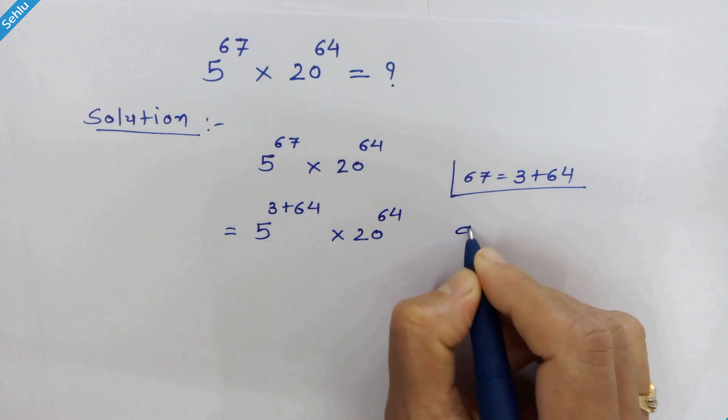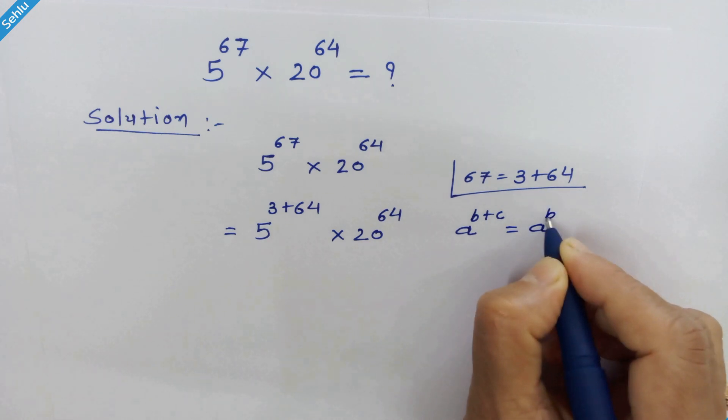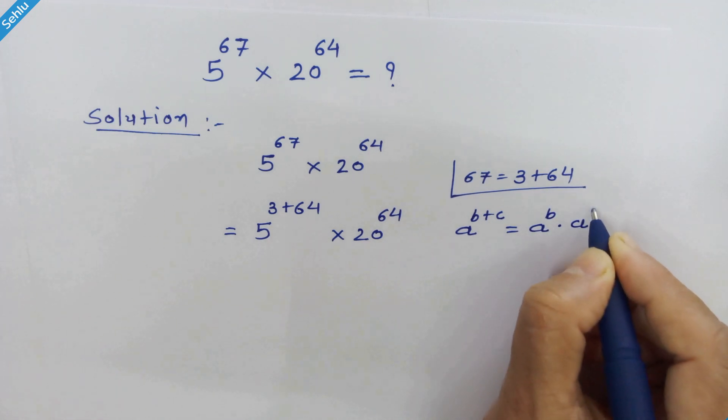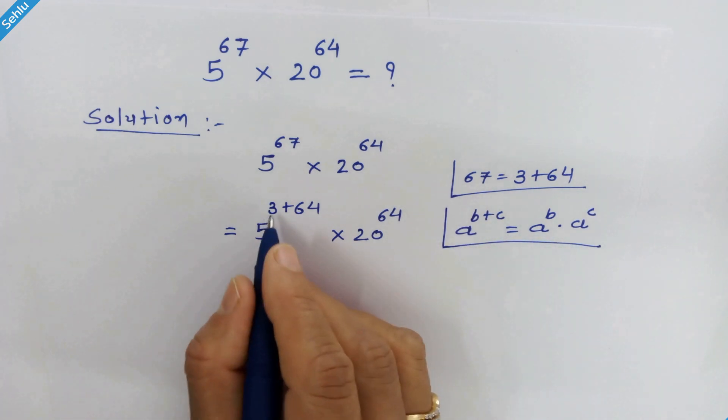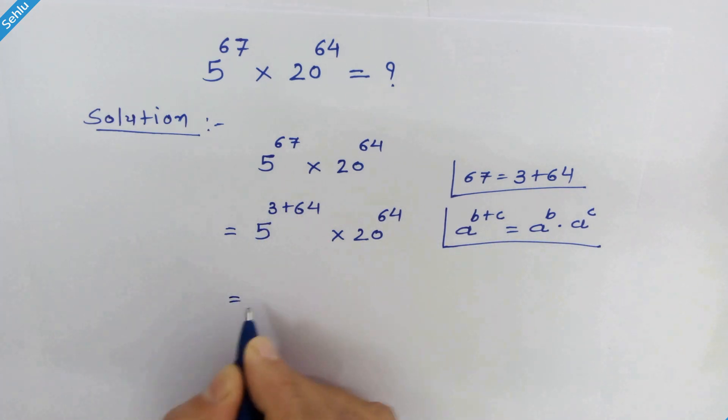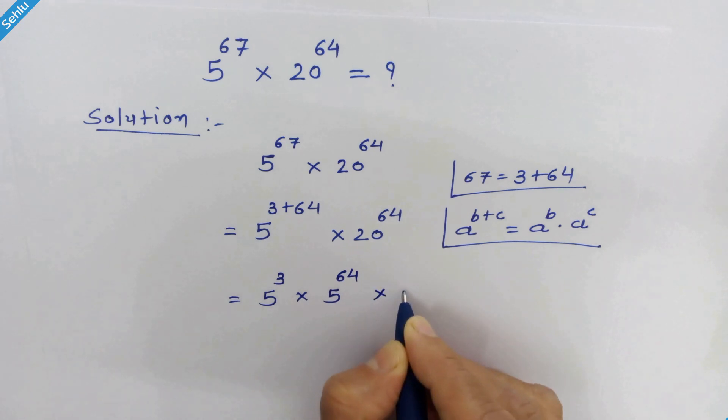Now as per the rule, if we have a raise to b plus c, then it will be a raise to b times a raise to c. And according to this rule, we can write this part as 5 raise to 3 times 5 raise to 64 times 20 raise to 64.